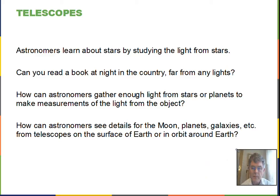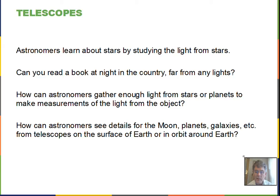Professor Clements here as we talk about telescopes. Astronomers would like to learn about the stars and planets, and they're pretty dim. You'd have trouble going out and reading a book at night far from any city lights. So what role does the telescope play in that? And also, how do we see details on the surface of the moon, surface of planets, details on how stars and dust clouds are arranged in galaxies and clusters of galaxies? How does that all work from an observing site on the surface of the earth, or a telescope in orbit around the earth? There's going to be more in this video than is in the book, tying in with my interest in telescopes. Let's see what we can discover.